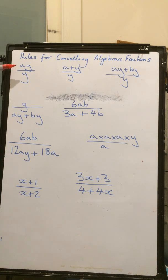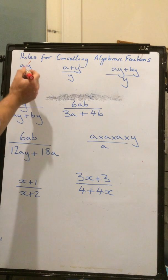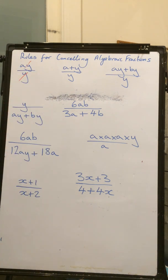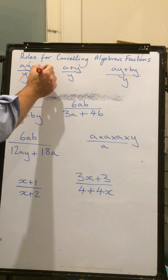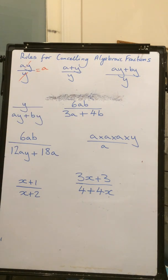ay over y. In this case, both the y's can cancel each other out. So, in this case, we end up with just a.